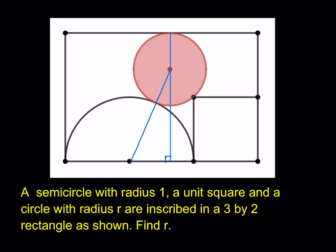This circle here is inscribed in an interesting region — it's kind of touching the square in the corner and it's tangent to the semicircle. So I'd like to connect one of the vertices, the closest one, to the center of the circle. And I'm also going to extend this line so that I can take advantage of some lengths. So the plan is to work with these two right triangles.